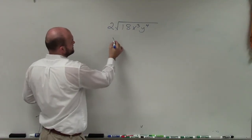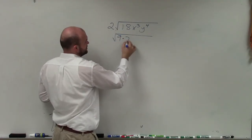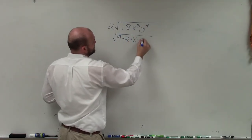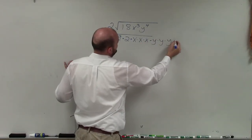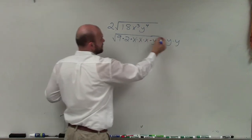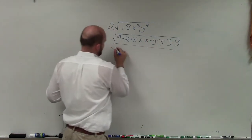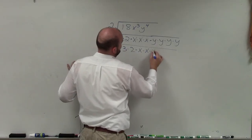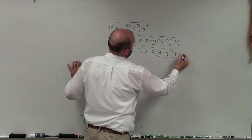If I was going to rewrite this as its prime factors, I'd break apart 18 into 9 times 2, and then I have x times x times x times y times y times y times y. Well, 9 is not a prime number, so I can rewrite that as 3 times 3 times 2 times x times x times x times y times y times y times y.